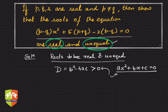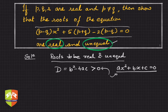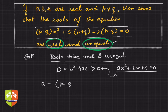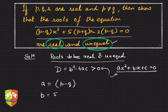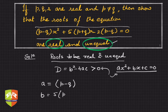So let us find the values of a, b, and c in our given equation. Here a is (p - q). And b is clearly 5 times (p + q) — I've missed an x there, so this term is the x term. Hence b = 5(p + q).